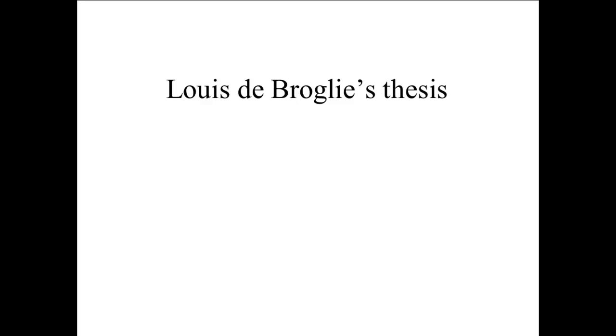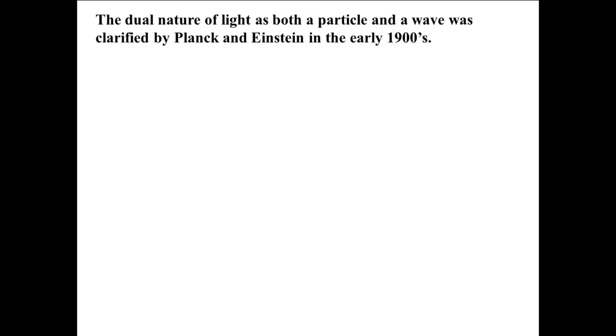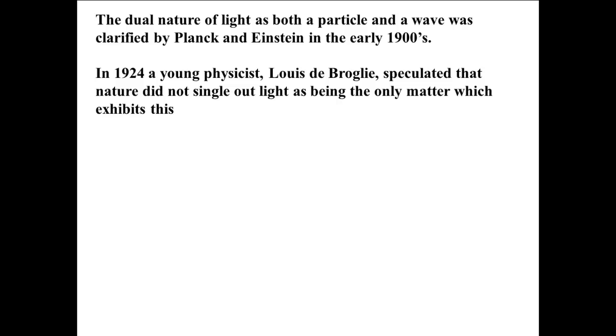Louis de Broglie's Thesis. In the early 1900's, Max Planck and Albert Einstein had established the dual nature of light as both a wave and a particle. In 1924, a young physicist named Louis de Broglie proposed in his doctoral dissertation that light was not the only thing in the universe that had this dual nature.